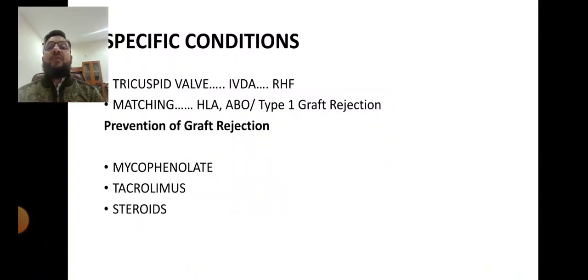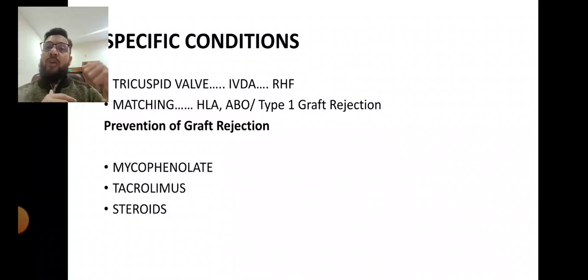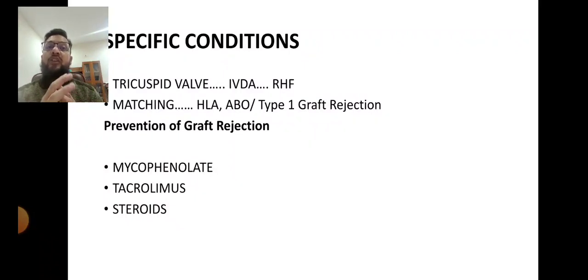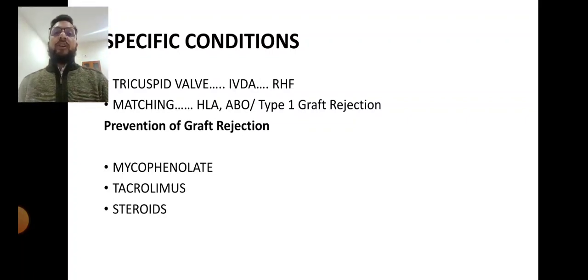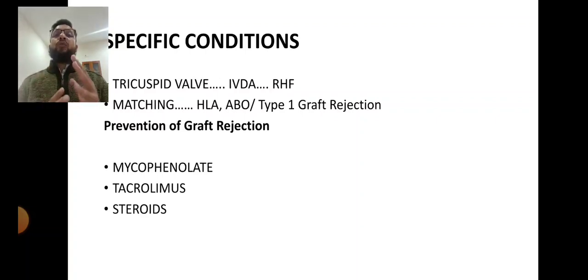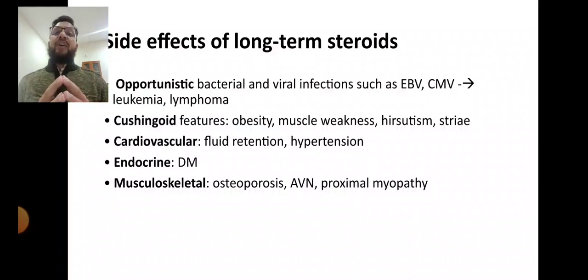Specific exam scenarios include: a patient with tricuspid valve involvement—likely an IV drug abuser with right heart failure as a complication. For heart transplantation, HLA and ABO type matching is required; if not done, the patient may get type 1 graft rejection. To prevent graft rejection, use tacrolimus, mycophenolate, and steroids. You should also know the side effects of these drugs.